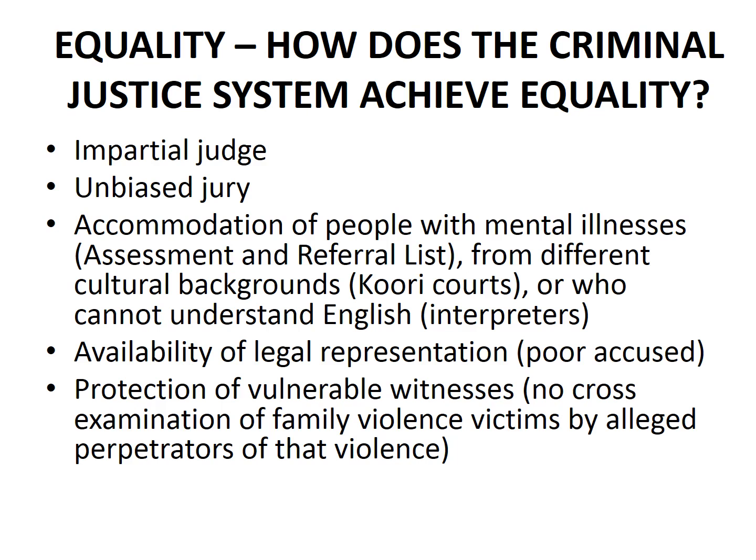This slide sets out five ways in which the criminal justice system tries to achieve equality. As with the previous slides about fairness, you only need to remember two or three of these and be able to explain how they achieve equality. Firstly, in the criminal justice system we have an impartial judge — impartial simply means the judge is not biased in favour or against either the prosecution or the accused. This is very important to ensure that people are treated equally, because the judge gives equal treatment to both the prosecution case and the accused case.